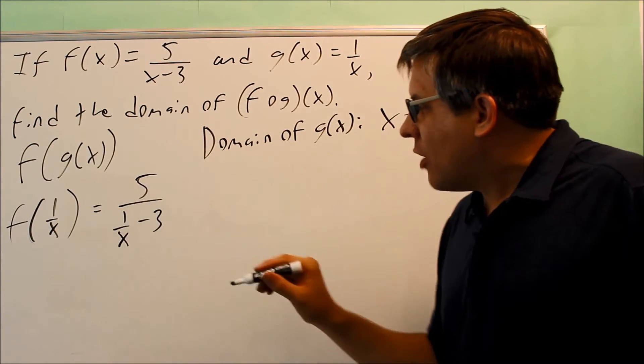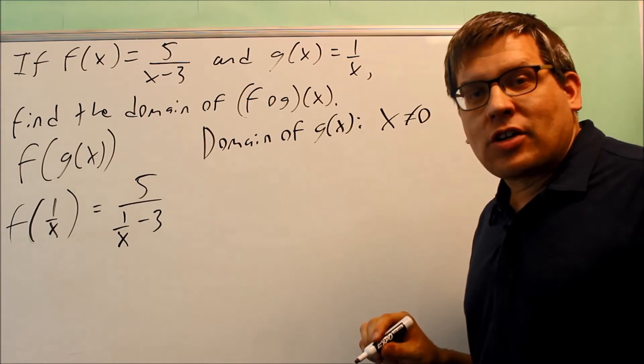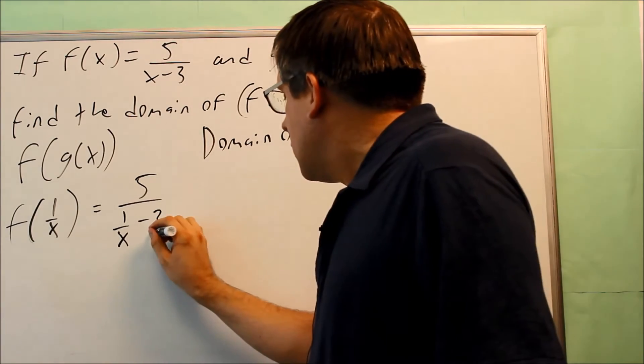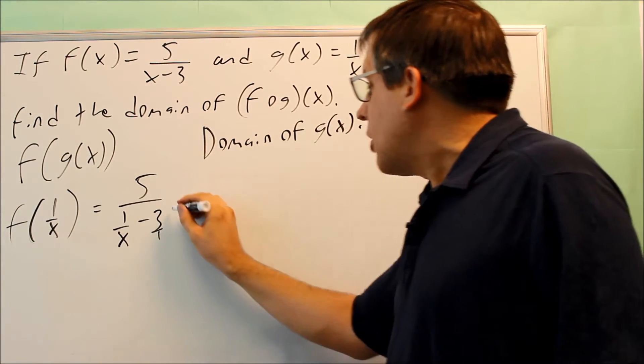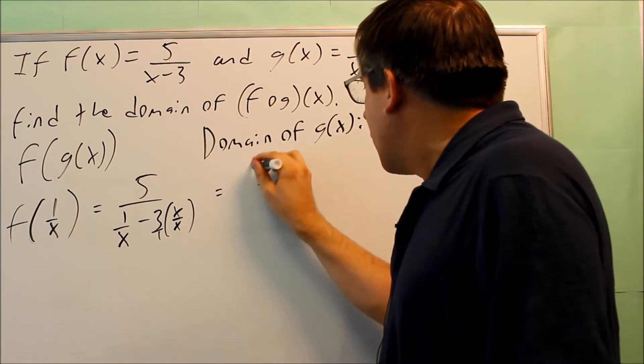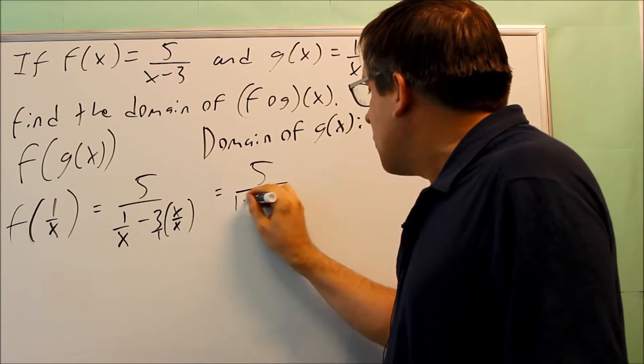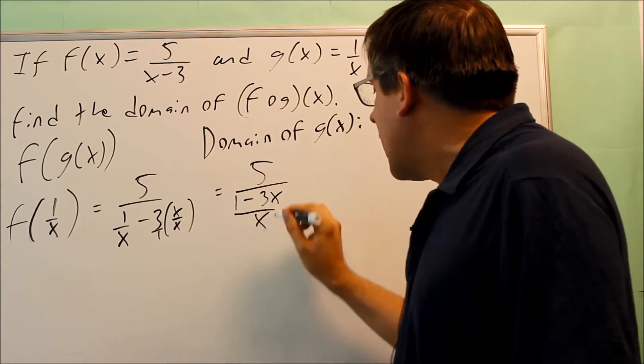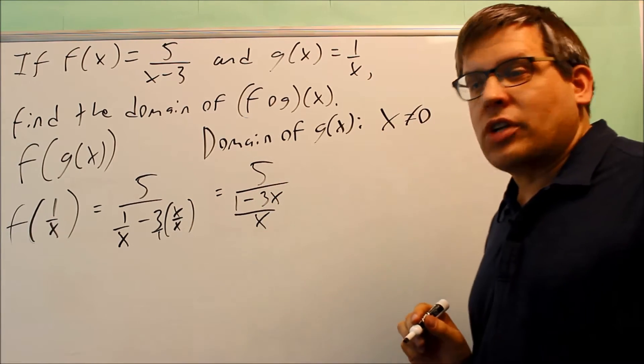But we're not done with this yet. We want to get rid of these double fractions. So I'm going to write this as 3 over 1. I'm going to multiply this by x over x to get my common denominators. I get 5 over, that's going to be 1 minus 3x all over x when I put that together over a single denominator.